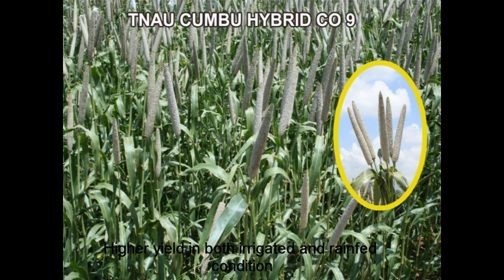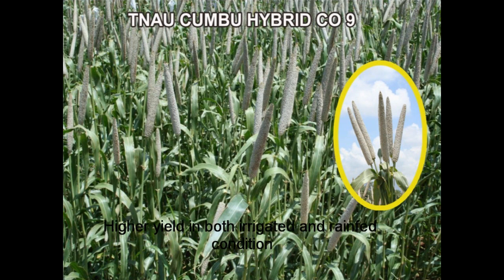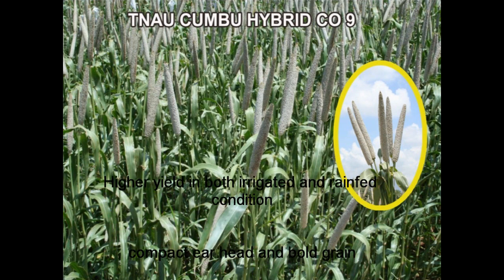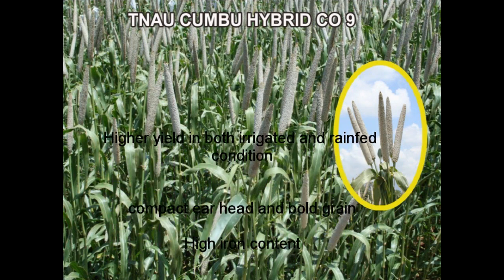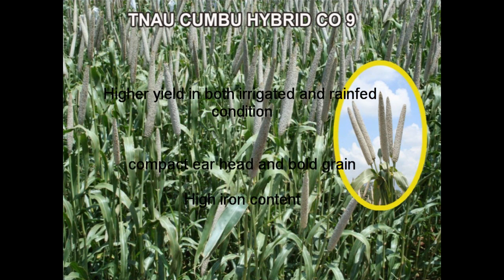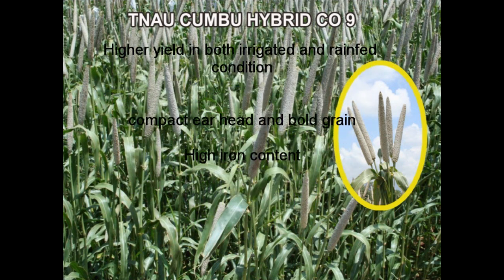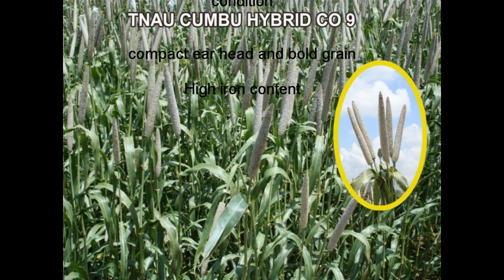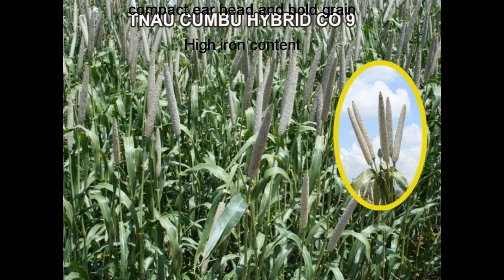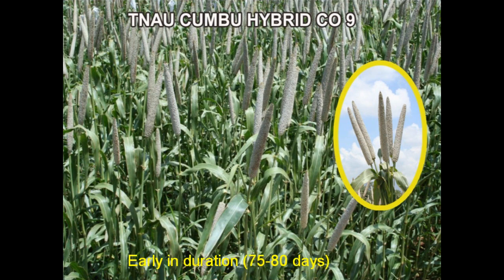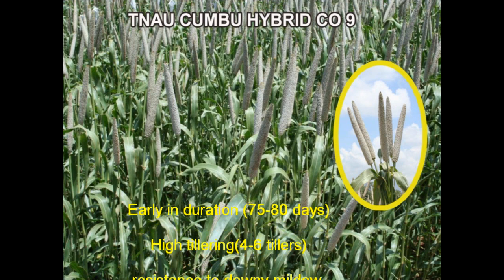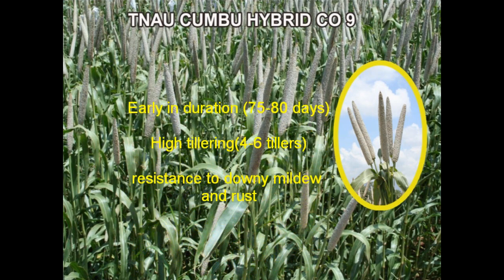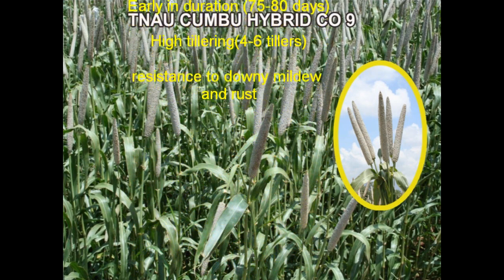Kumbu Hybrid CO9 is a high-yielding crop suitable for both irrigated and rain-fed conditions. It has a compact ear head and bold grains. It contains higher iron content. Duration is 75 to 80 days and it has high tillering ability.